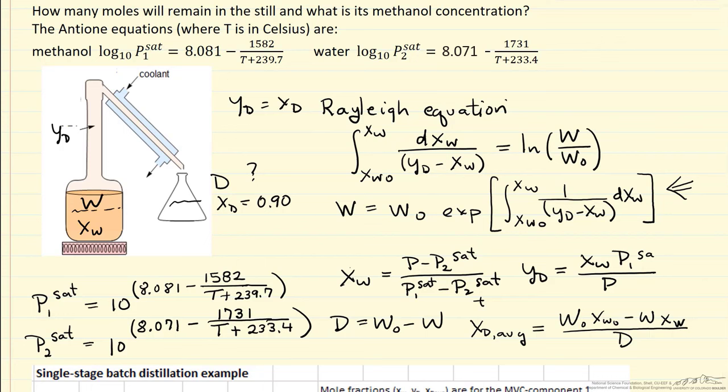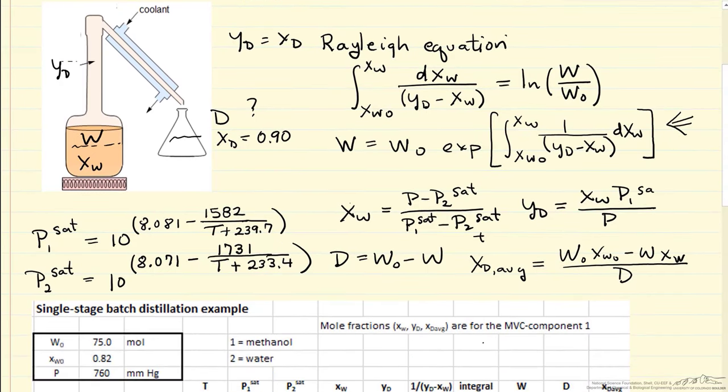Instead, what we know is the starting value for x_w, which is x_w zero. So what's done in the spreadsheet is to determine the temperature.